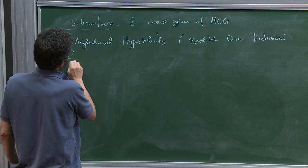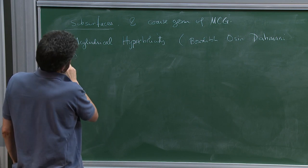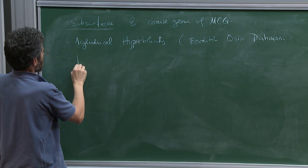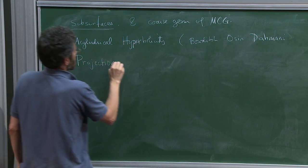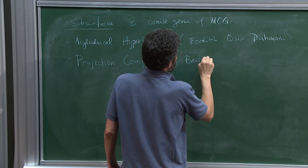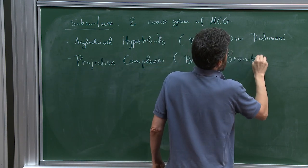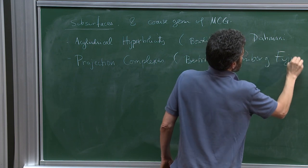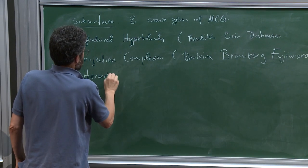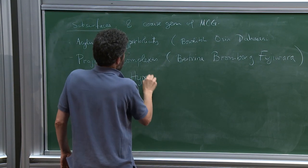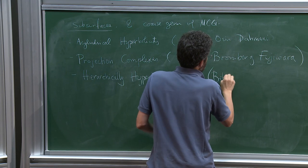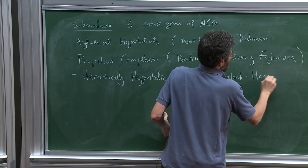There's another, more restrictive situation called projection complexes — I think that's what they're called — which is a kind of device worked out by Bestvina, Bromberg, Fujiwara. And the notion of hierarchically hyperbolic groups and spaces, which is Behrstock, Hagen, and Sisto.